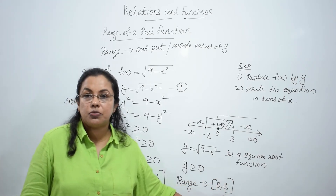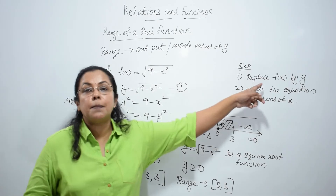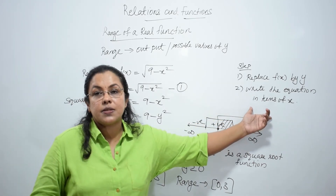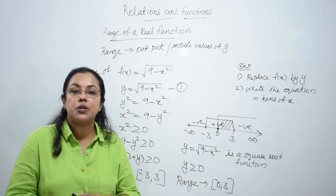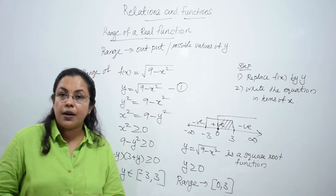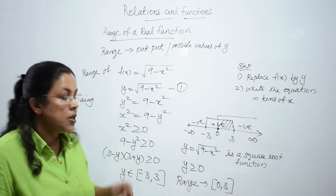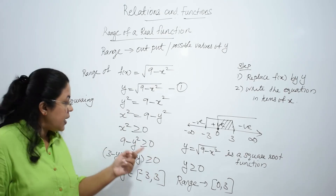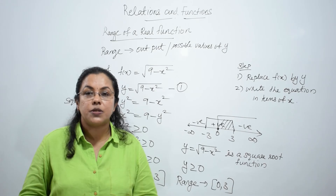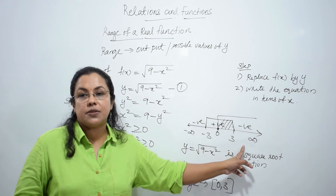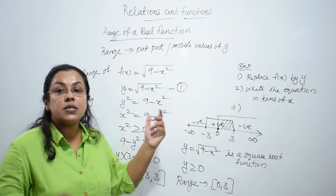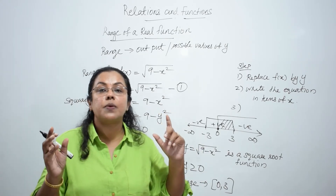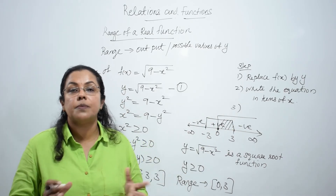To summarize: replace f(x) by y, then square both sides to write the equation in terms of x. We get x² = 9 - y². Since x² ≥ 0, then 9 - y² ≥ 0, giving y ∈ [-3, 3]. Additionally, since y is a square root function, y ≥ 0. Combining both conditions, the range of the function is from 0 to 3.